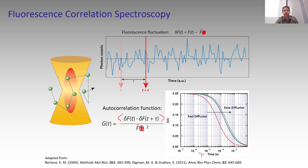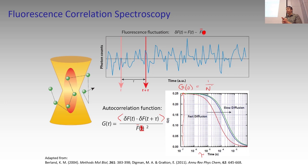Not only can I get diffusion out of my autocorrelation function, but also if I measure the amplitude G at tau equals zero, that equals one over the number of molecules I have in my volume. If I want to measure the absolute concentration of dorsal GFP, I can calculate the autocorrelation function, which tells me the number of molecules in my confocal volume. Since confocal volumes are stereotypical for a given laser and microscope, knowing the volume and number of molecules gives me the absolute concentration.